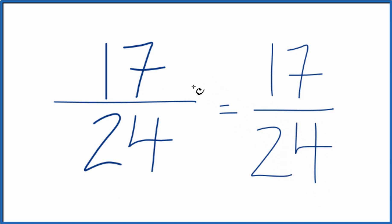What that means is that we can't simplify this fraction 17 24ths any further. It's already in lowest terms. So in answer to the question, how do you simplify 17 24ths? You can't, it's already simplified.